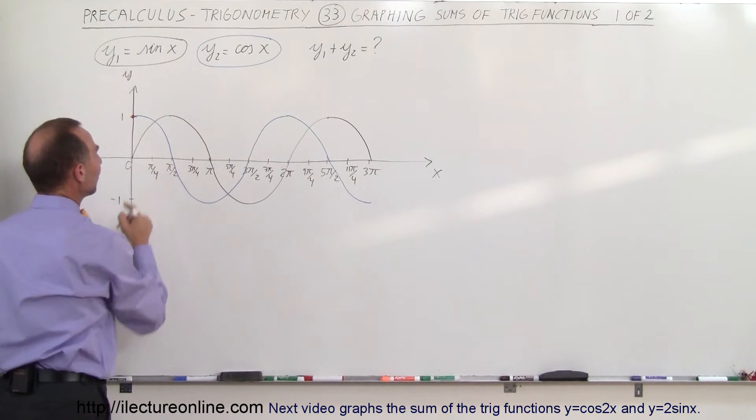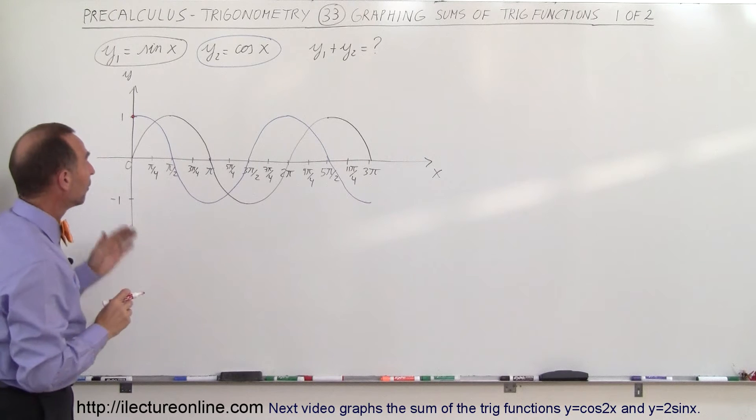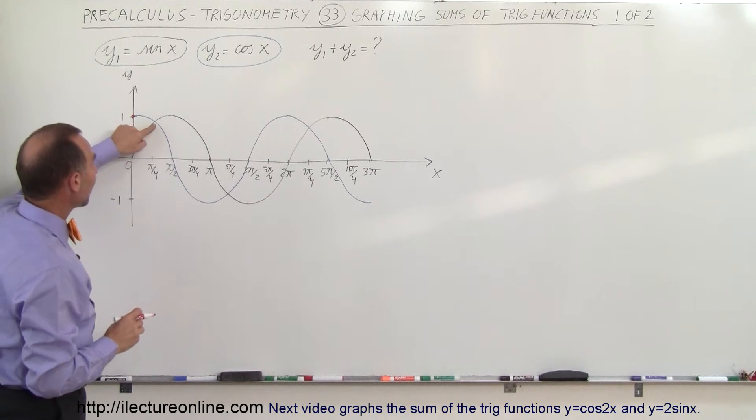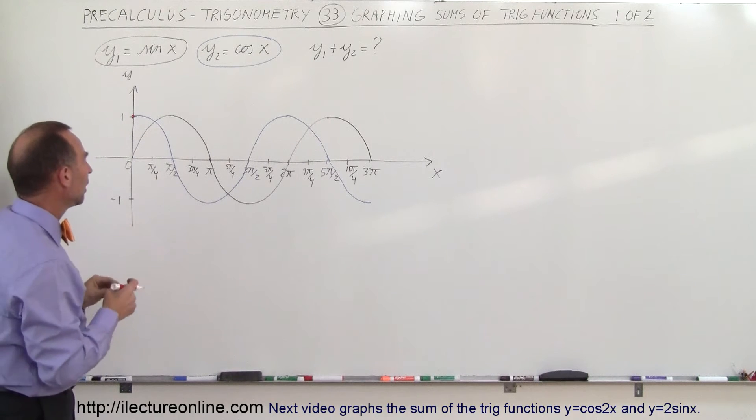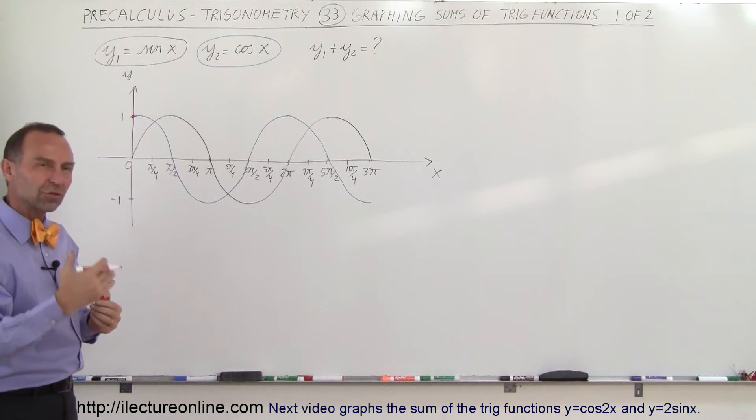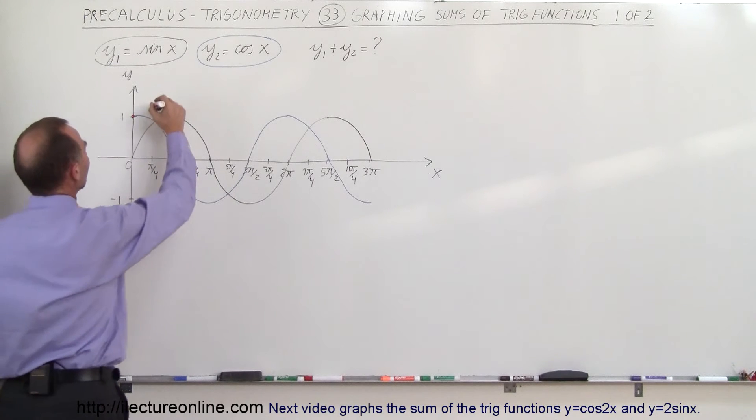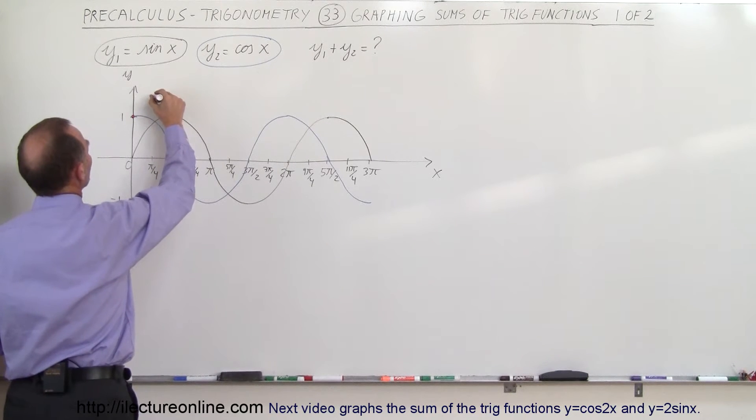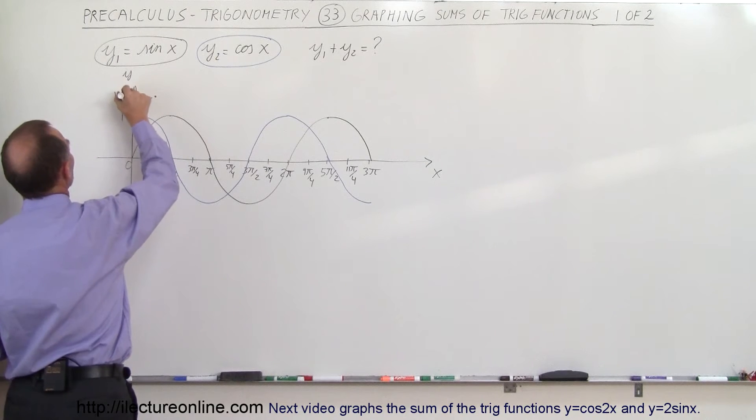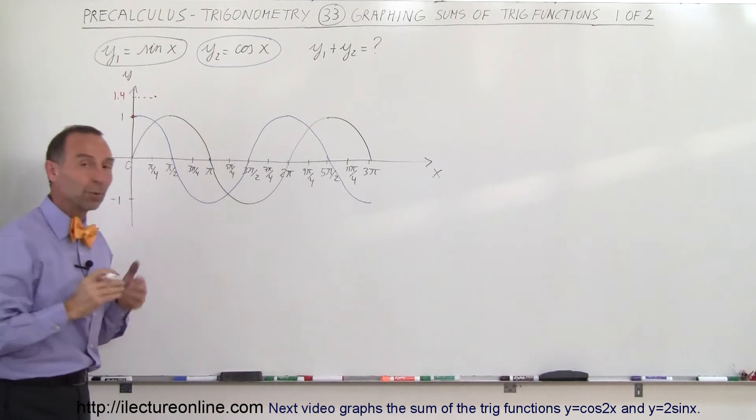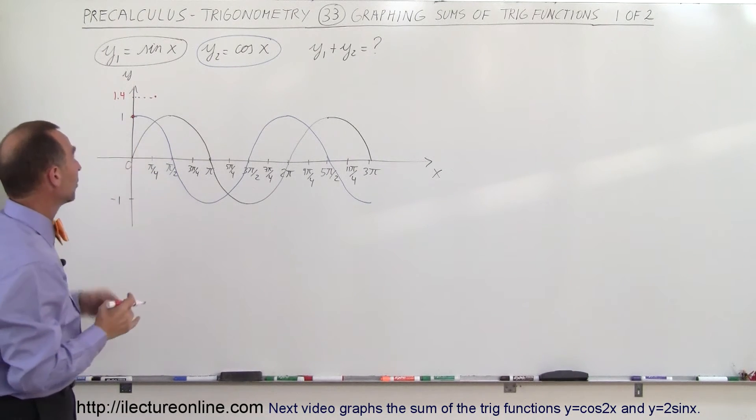If we now go to 45 degrees, pi over 4, both the sine and the cosine have the same value at pi over 4. It would be 0.707 or the square root of 2 over 2. So if you add them together, 0.707 plus 0.707 is about 1.4. So I'll draw the dot right there representing a value of about 1.4.